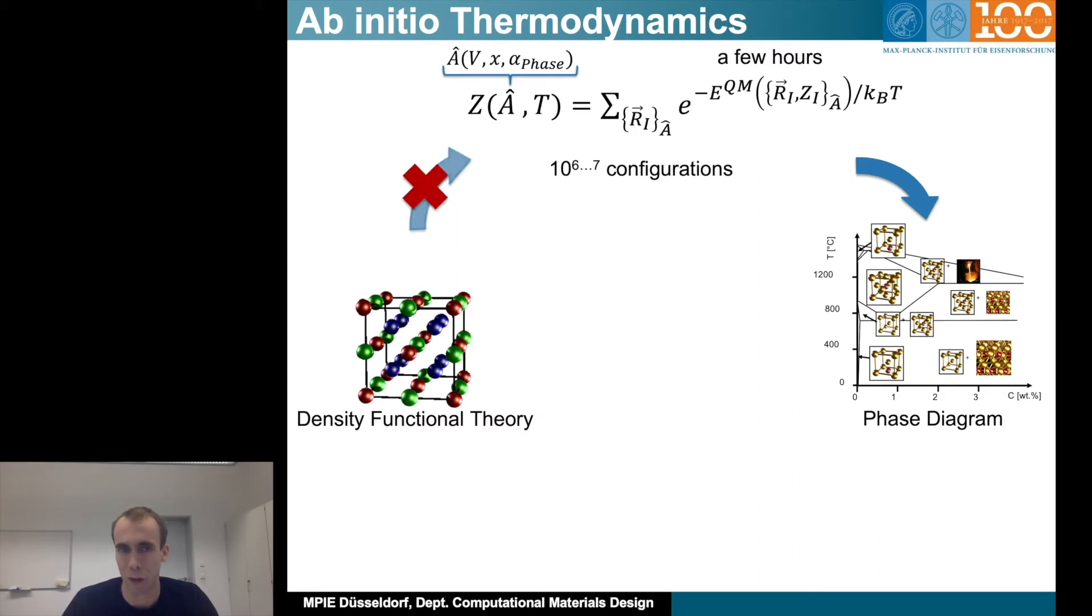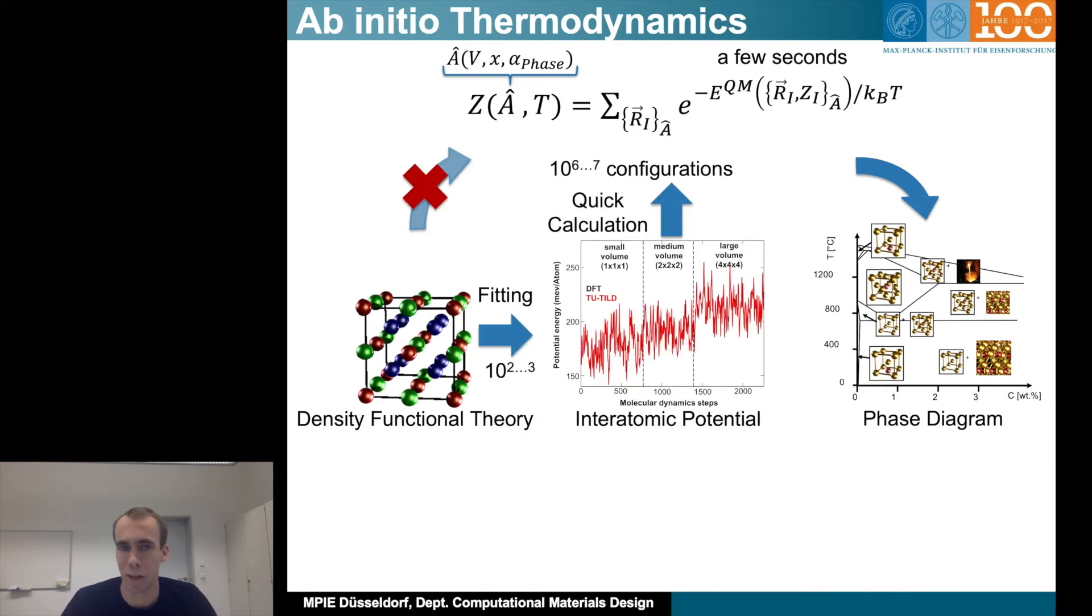So the more advanced way is therefore going this intermediate step. We use density functional theory, we fit an interatomic potential based on a hundred or a thousand configurations, and then we use this interatomic potential to quickly evaluate the 10 to the power of 6 or 7 configurations. Using the interatomic potential, these evaluations only take a few seconds, which really gives us the ability to compute phase diagrams.